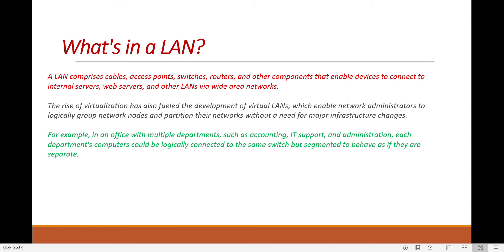It can happen that two LAN networks are situated some distance apart, even in different cities, and those can connect with each other over a WAN — a wide area network.